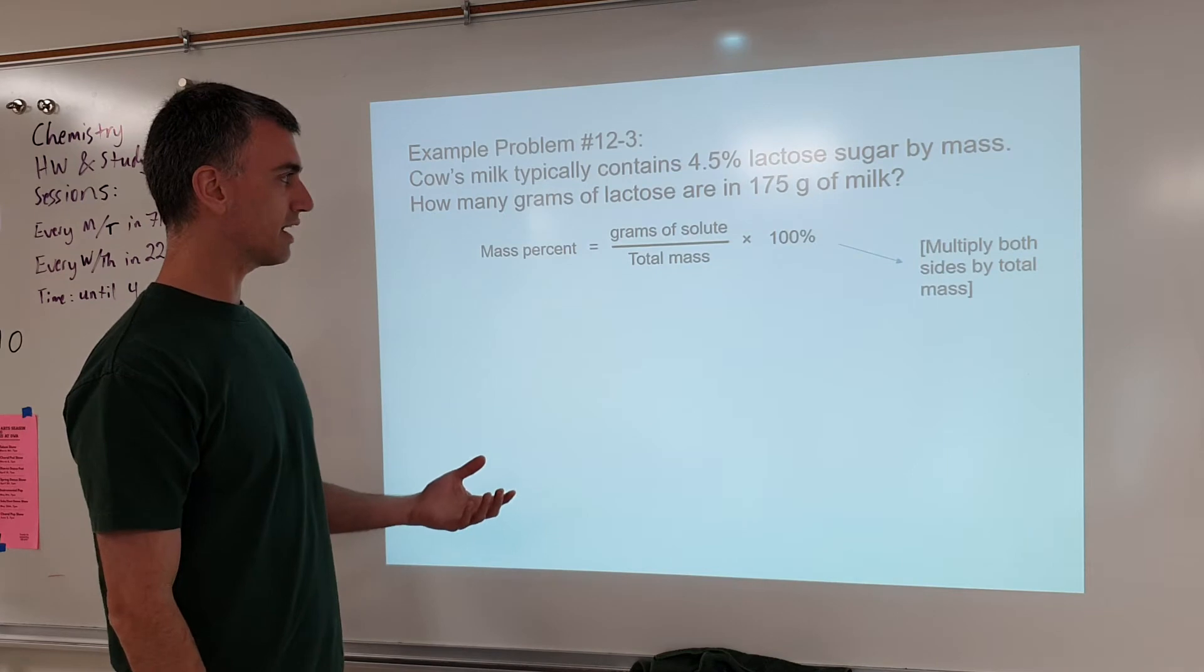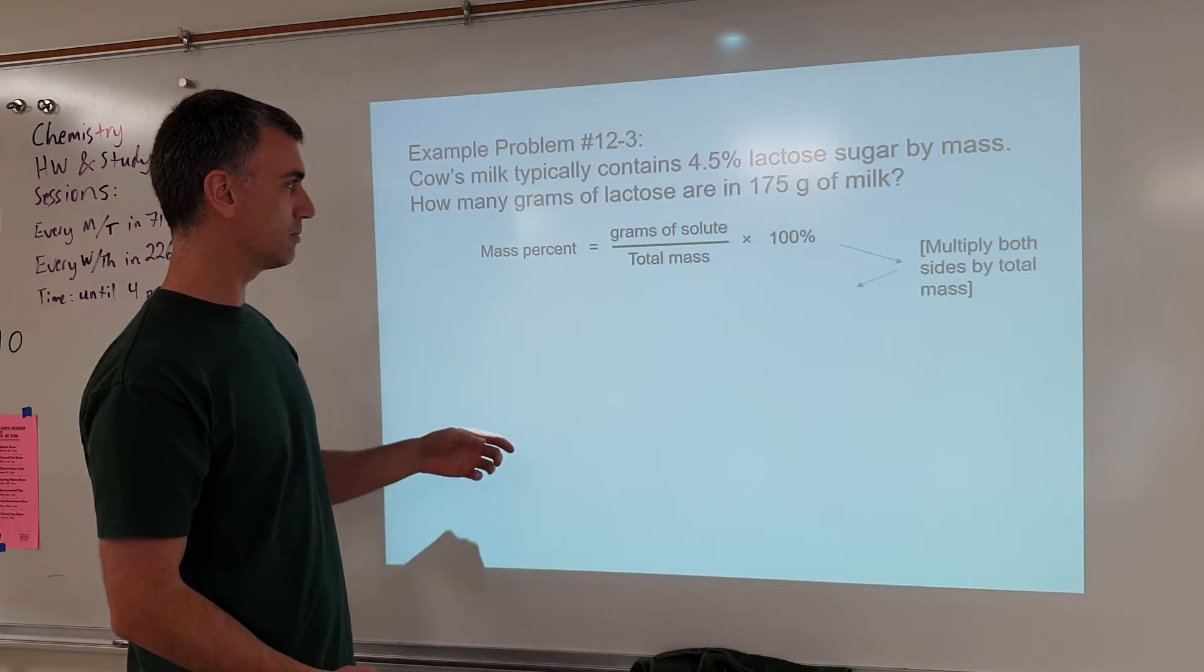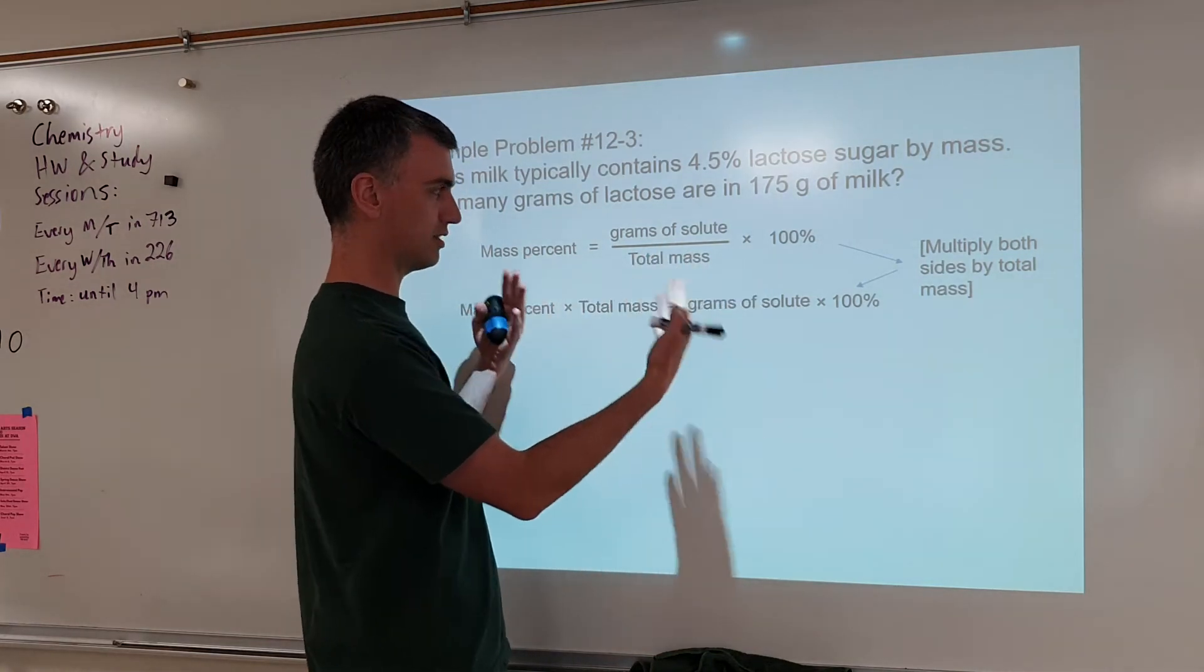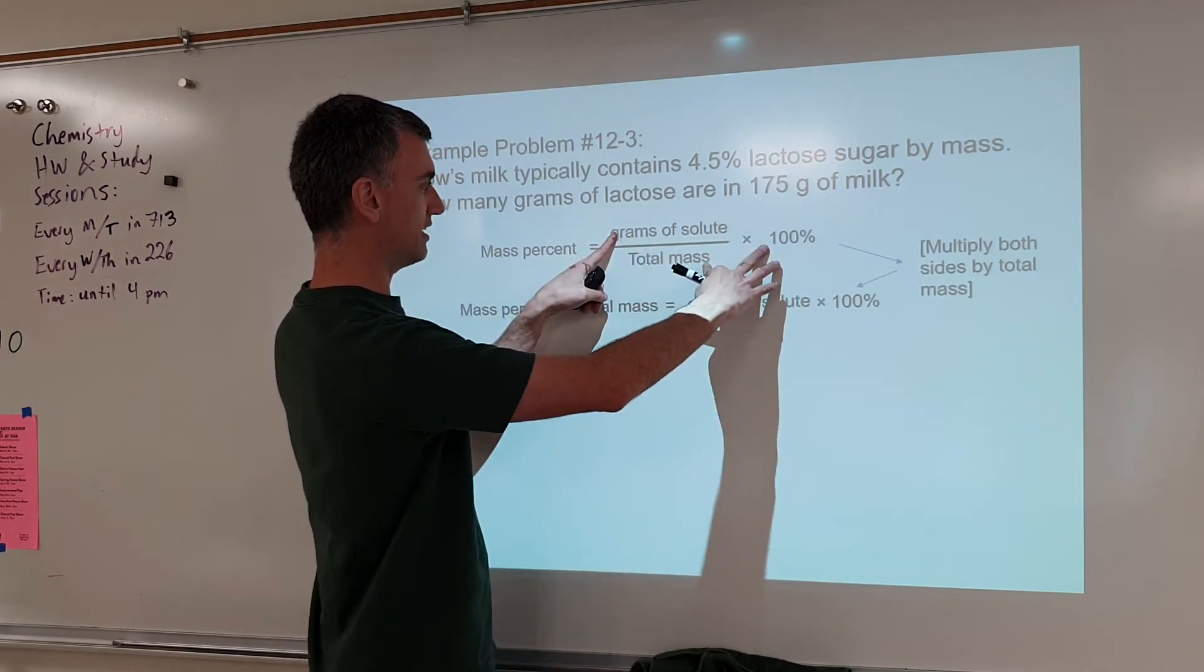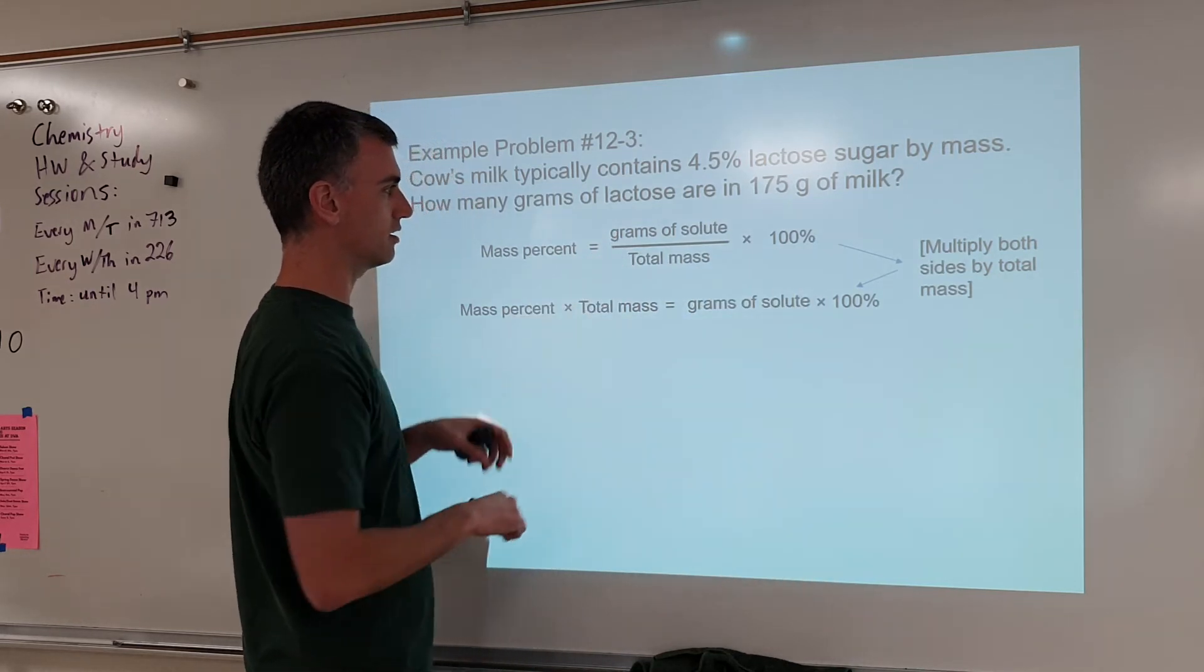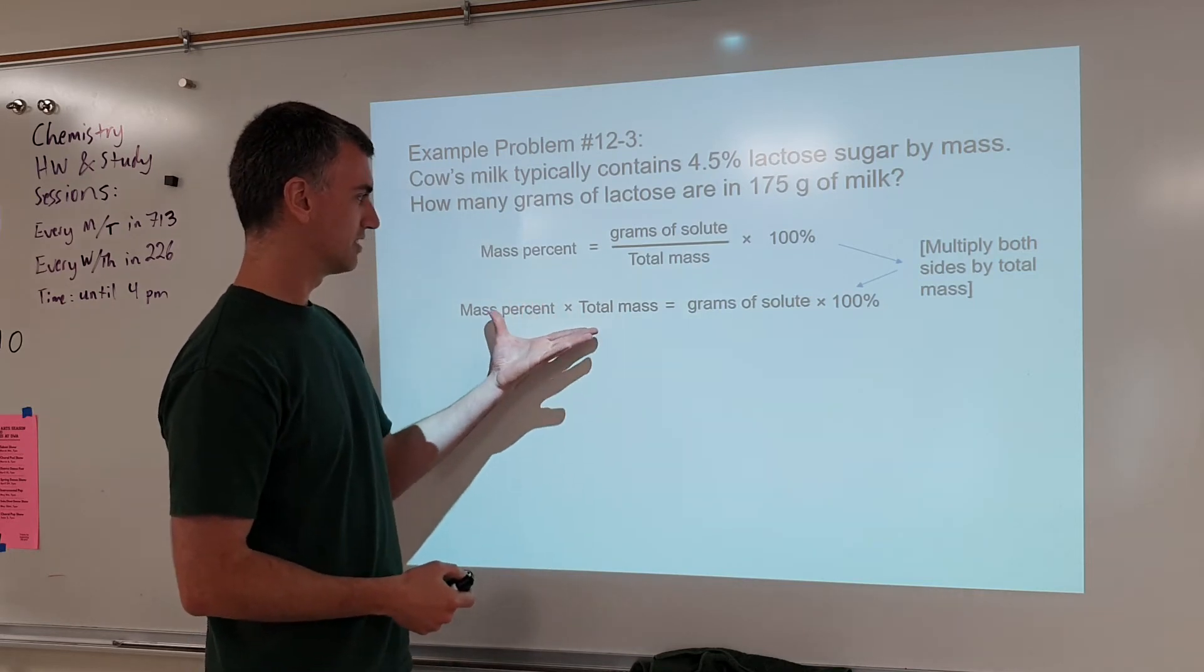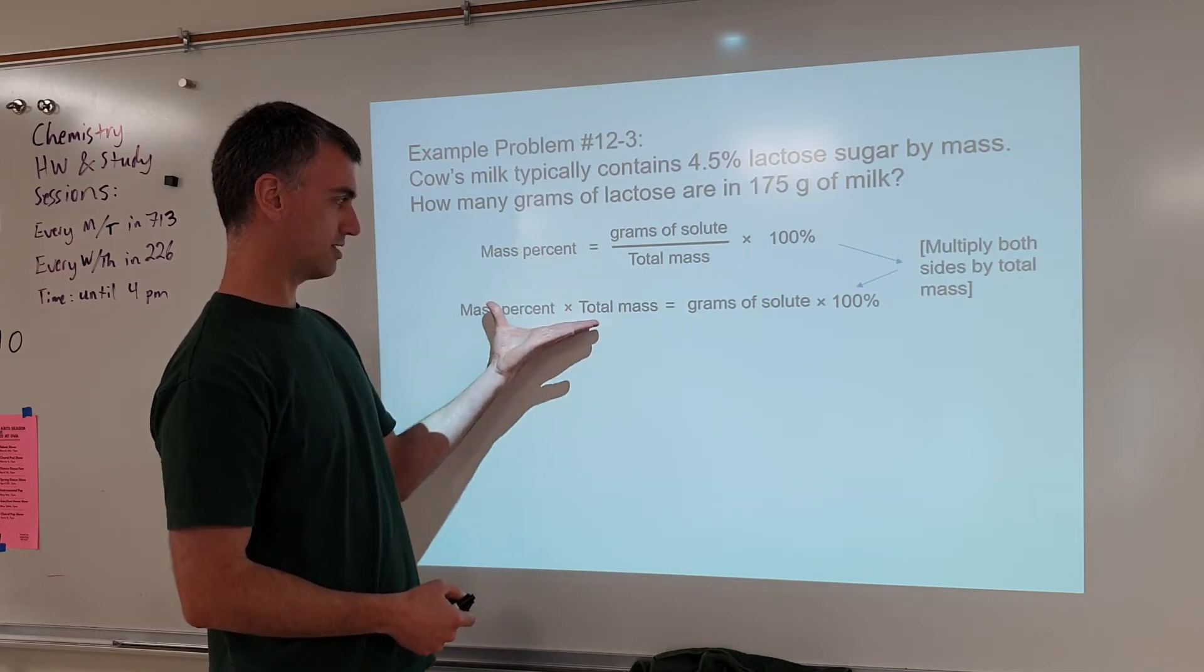What that means is we have to then rearrange the equation to get this by itself. So that means divide both sides by 100%. Remember, when it comes to arranging an equation, you have to divide both sides or multiply both sides, whatever it is you've got to do it to both sides. So if we want 100% to go away, we need this by itself, divide both sides by 100%. Oh, I see I did it a different way in here. So in this case, I did the total mass. So if I multiply both sides by total mass, it turns into this.